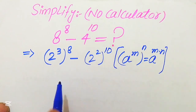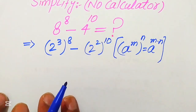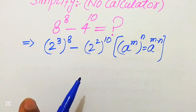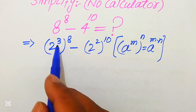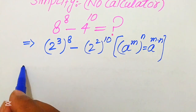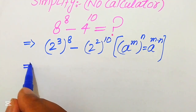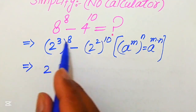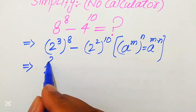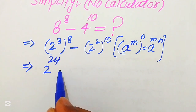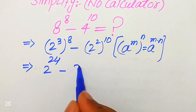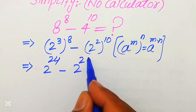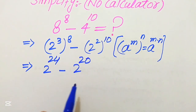According to this exponent law we multiply these exponents, giving us 2 to the power of 24 (since 3 × 8 = 24) minus 2 to the power of 20 (since 2 × 10 = 20).